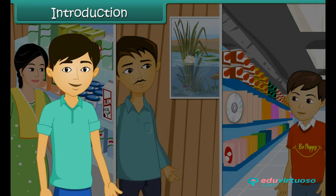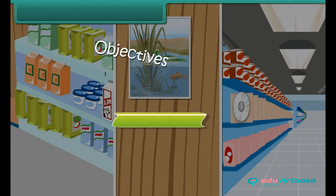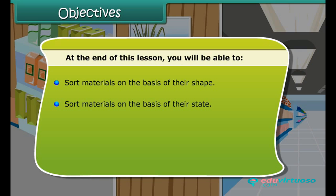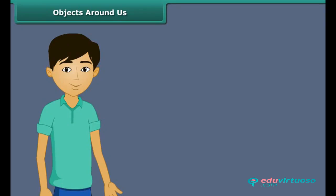In this lesson, we will learn in detail about the basis for classification of materials. At the end of this lesson, you will be able to sort materials on the basis of their shape, sort materials on the basis of their state, sort materials on the basis of the raw material used, and understand why sorting of materials is important.